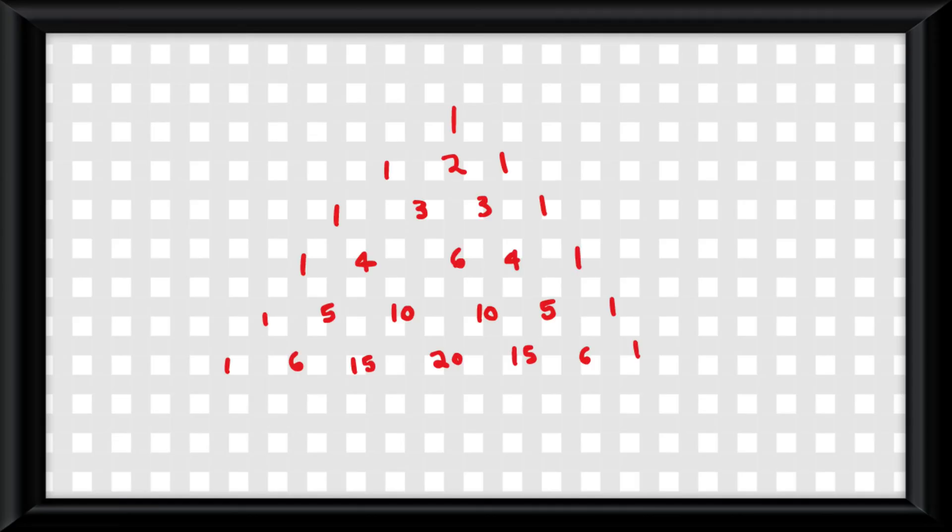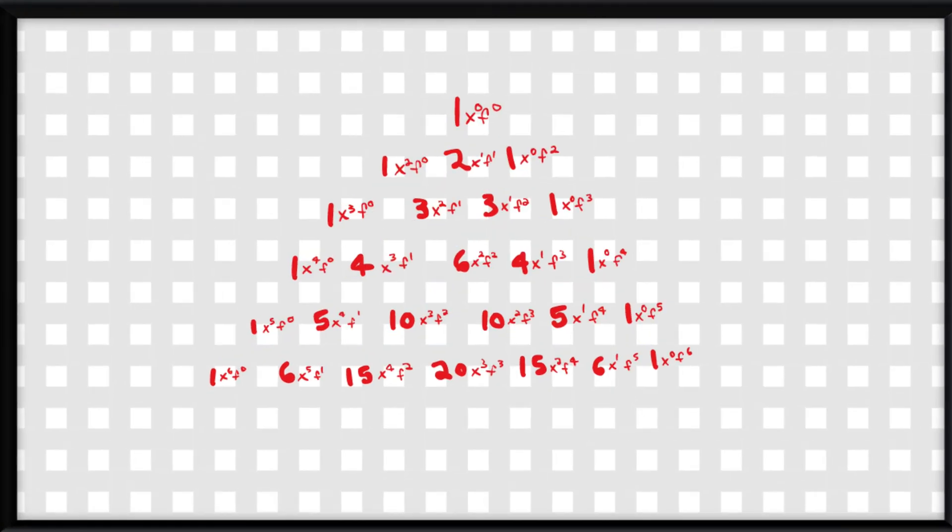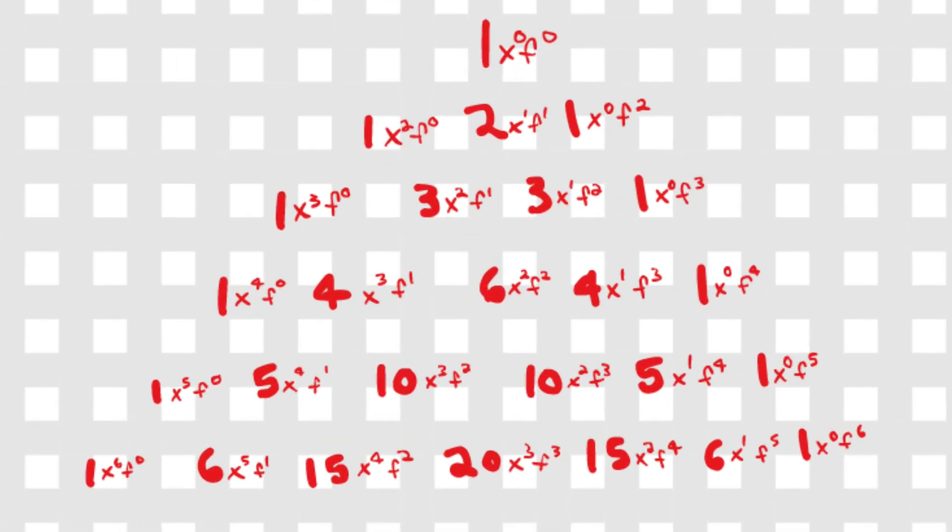Pascal's triangle is a diagram of numbers where each number is the sum of the numbers above it. Adding powers to Pascal's triangle, you can see the pattern of exponents going up and down. In this triangle,